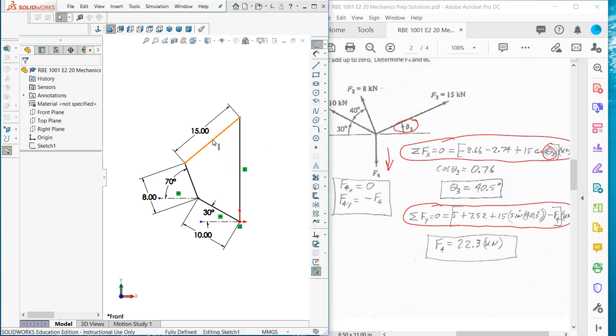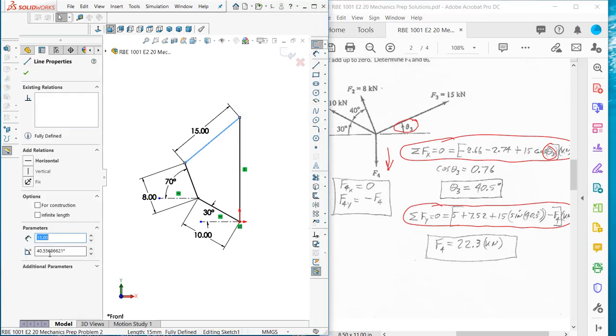If I click on this one, we can see there's the 40.5. And if I click on this one, we can see there's the length of 22.3. This is just a graphical verification of this other method where we did the problem by using components.